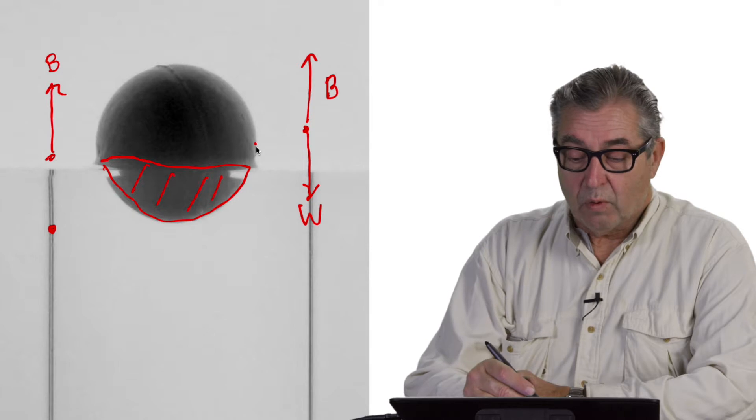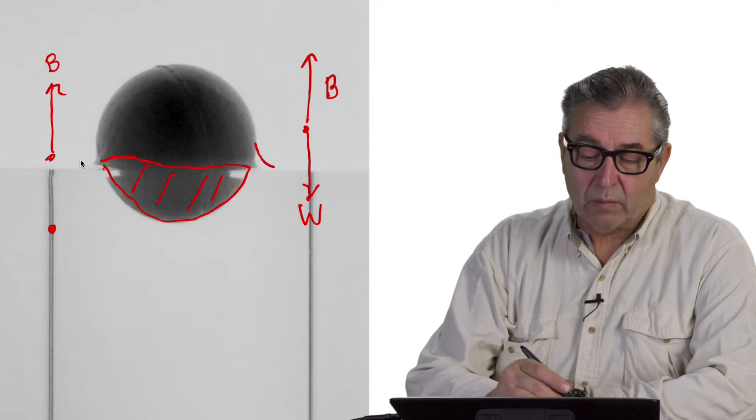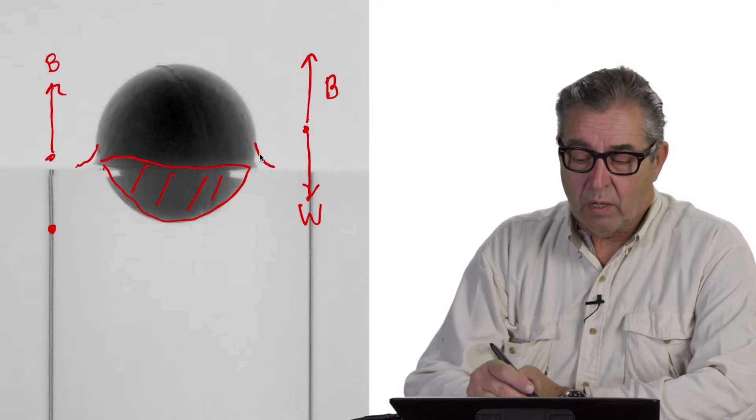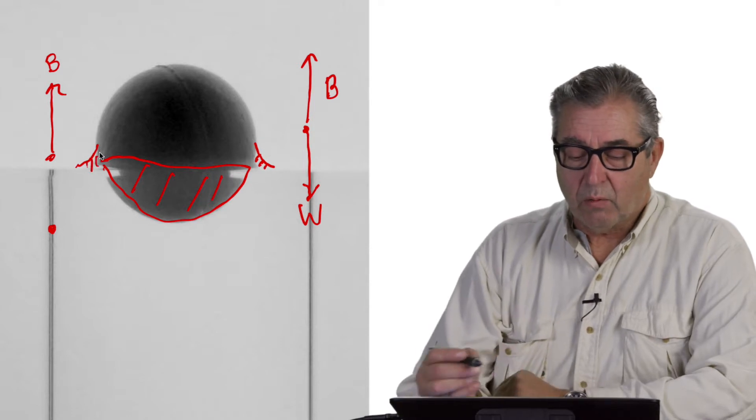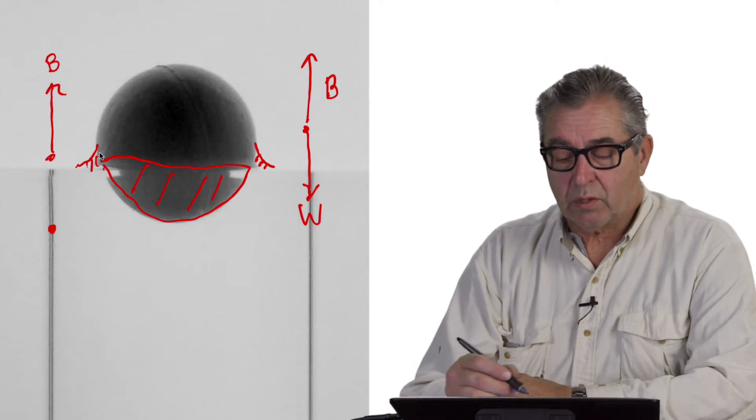However, when all these major forces go to zero, surface tension is still present, represented by the meniscus that surrounds the ball.